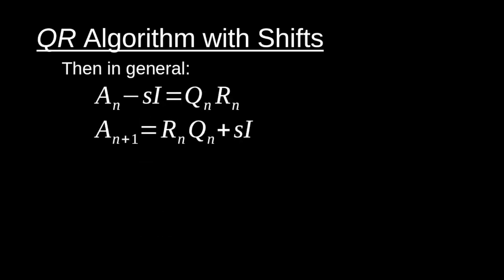More generally, for each subsequent iteration after zero — you can start shifting from the beginning or after computing the first similar matrix — we apply the shift every single time. We take AN, subtract off the identity matrix times the scalar shift, compute a QR decomposition of that shifted matrix, compute a similar matrix using RN and QN, and then re-add that shift.